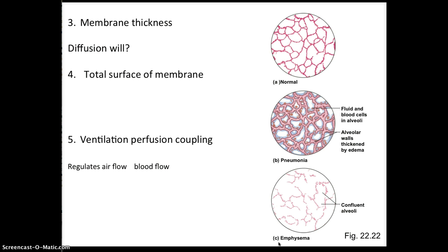Ventilation-perfusion coupling regulates airflow and blood flow in an interconnected way. The autonomic nervous system can influence both: bronchodilation increases airflow coming in, while bronchoconstriction decreases it. Blood flow to the alveoli can also be changed by the amount of blood entering the capillary system, influenced by the autonomic nervous system and by local control.